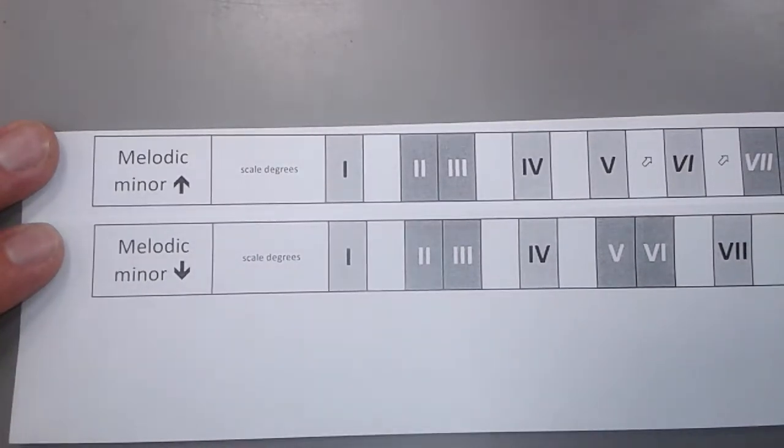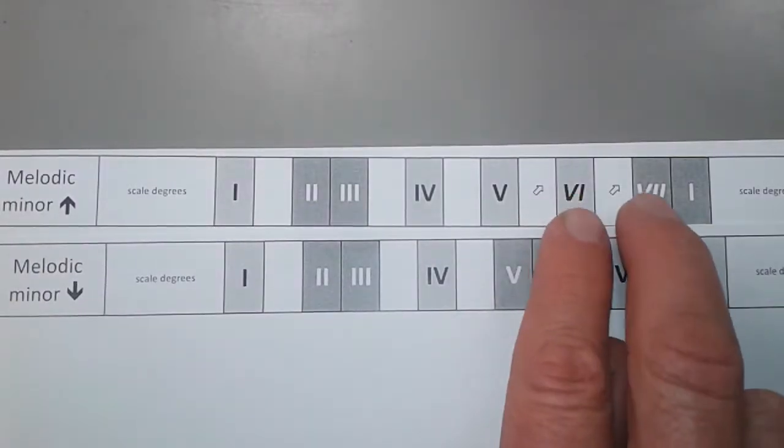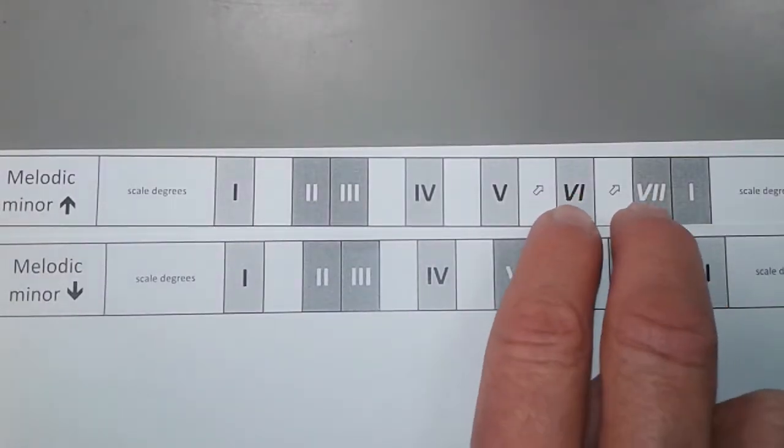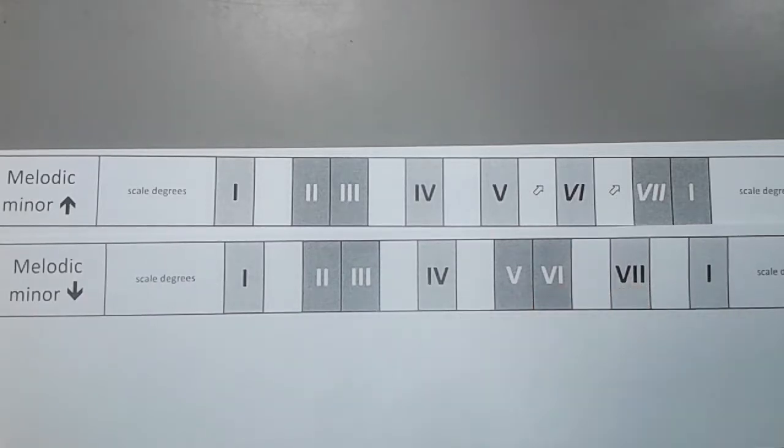And so we also have the melodic minor scale, which, in fact, has two versions: a going up version, where notes six and seven are pushed up, and a going down version, where notes six and seven are pushed down.